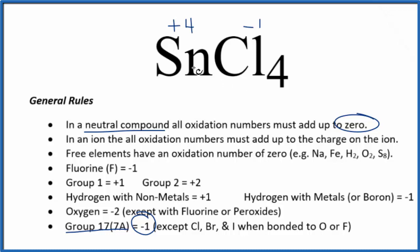So we can check our oxidation numbers here for tin4 chloride. 4 times minus 1, that's minus 4. Minus 4 and plus 4 gives us 0, so those are the correct oxidation numbers.